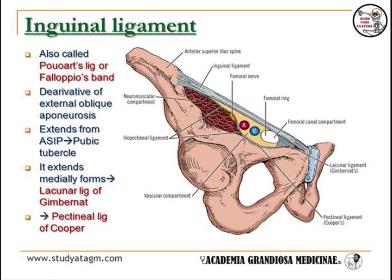The iliopectineal arch divides all the space between the inguinal ligament and the hip bone into two parts: muscular lacuna and vascular lacuna.